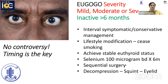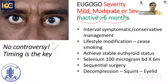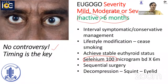Management takes all this into consideration. When severity is mild, moderate, or severe, but the disease has been inactive for more than 6 months, then there is no controversy. Timing is the key. In the interim period where you wait 6 months for stability, you cover patients with symptomatic or conservative management. Lifestyle modification, especially cessation of smoking, is supposed to help. Also, achieving stable euthyroid status by good thyroid control. Use of selenium is controversial, but it is supposed to help in patients who have had recent onset mild disease in minimizing the risk of progression, or it can also work on eyelid retraction.